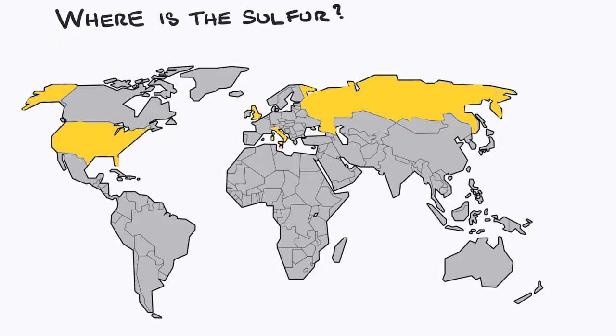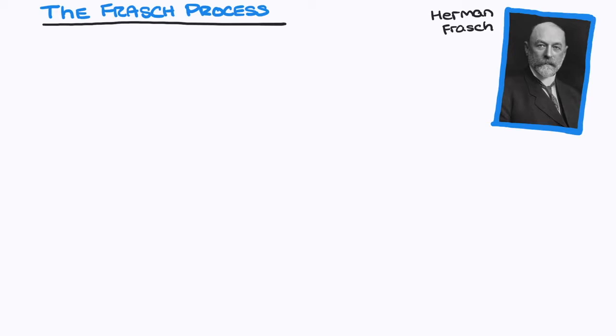It also occurs as hydrogen sulfide, usually in natural gas and petroleum, as sulfates present in oceans, and as metal sulfide ores, which is the main source for Australia.